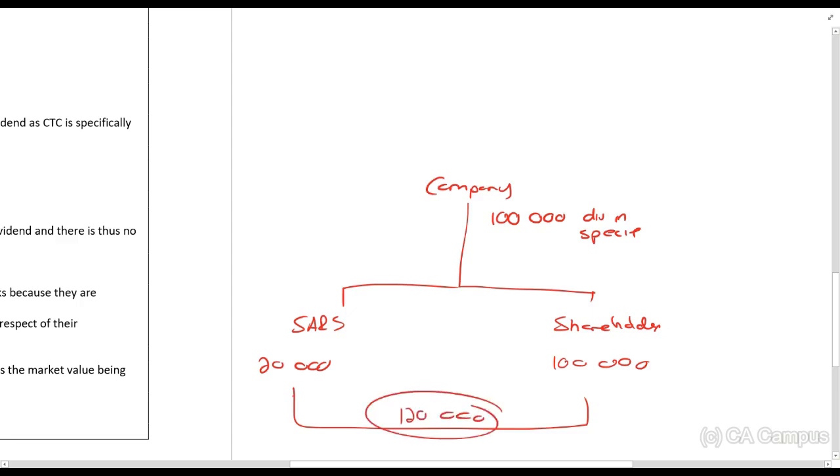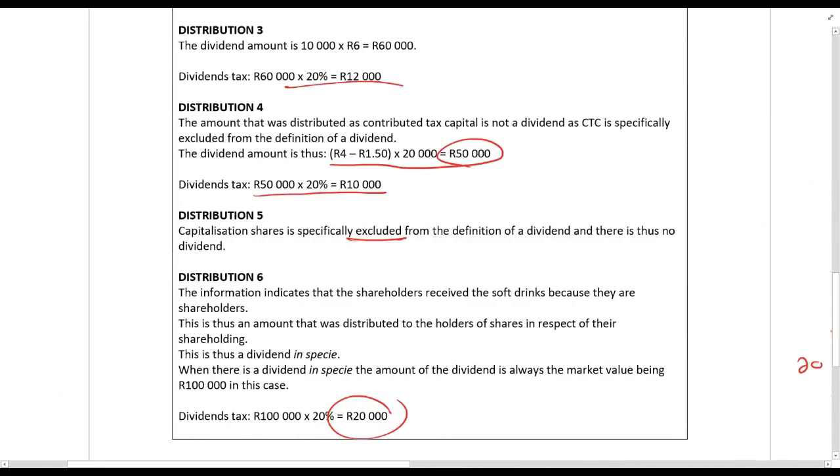If it was a cash dividend, then the shareholder would receive 80,000, and the total flowing out of the company would be 100,000, so it would be equal. That means who's liable? If it's a cash dividend, the shareholder is liable because they take the knock. And if the dividend is in specie, the company is liable because they take the knock.